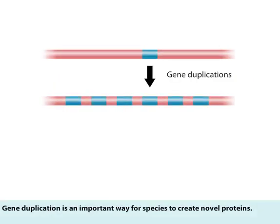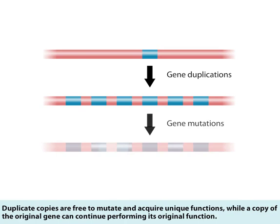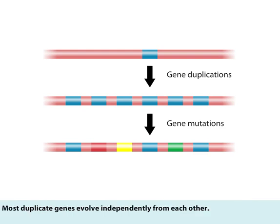Gene duplication is an important way for species to create novel proteins. Duplicate copies are free to mutate and acquire unique functions, while a copy of the original gene can continue performing its original function. Most duplicate genes evolve independently from each other.